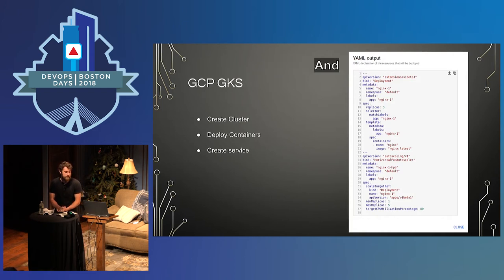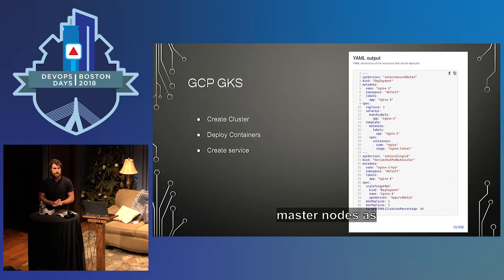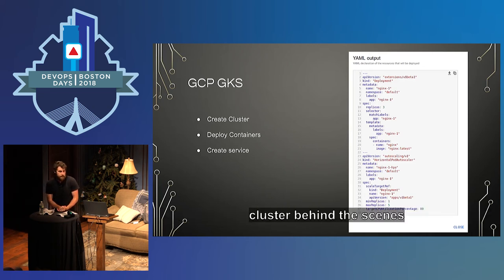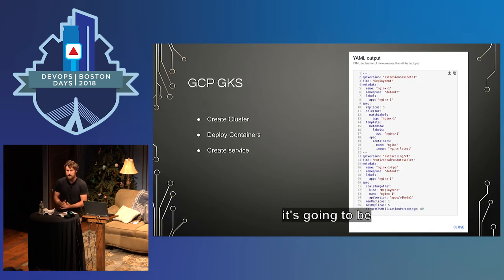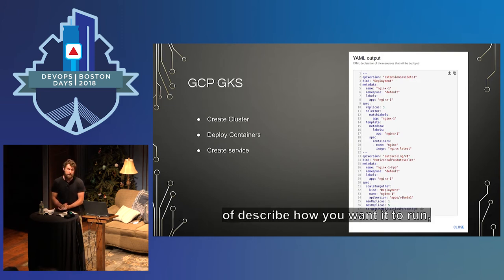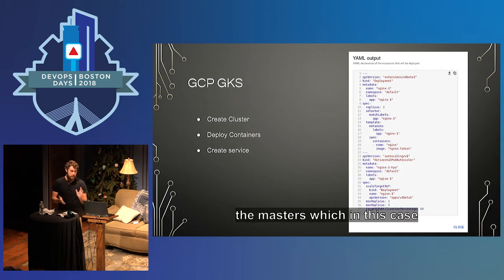With Google's managed Kubernetes service, with the click of a button you create the cluster. Behind the scenes, they manage all the master nodes — as they dynamically spin up, they share IP addresses and join themselves in a cluster. However many worker nodes you want to add, they get added directly to the cluster without you having to worry about it. Deploying your containers and creating services is similar to Docker Compose — generally a YAML file where you describe how you want it to run and how many you need — and all the routing and scaling is done by the masters, managed by the cloud provider.